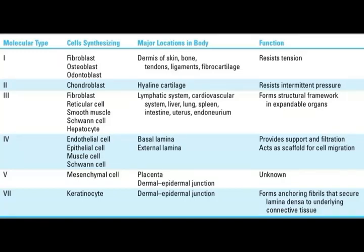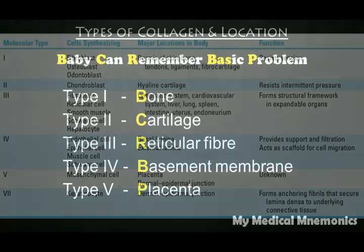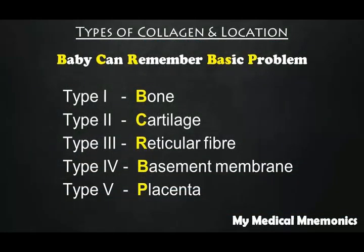The important ones are five types: Type 1, Type 2, Type 3, Type 4, and Type 5. Another important fact to remember is the locations — where is Type 1 predominant, or which type of collagen is predominant in the basement membrane. Here is a very simple mnemonic to help you remember: 'Baby Can Remember Basic Problem Simple.' Every word is for every type of collagen.